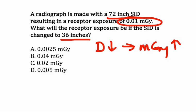If our distance is decreasing, our exposure will increase. That's what the exposure was 0.01 milligray. And we know our new exposure must increase. We can immediately eliminate A and we can immediately eliminate D because we know our exposure, which is our milligray, must increase.